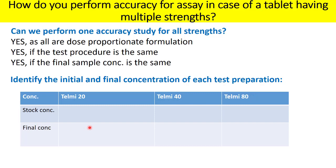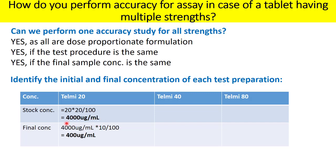The stock concentration is the initial concentration of Telmisartan. For Telmisartan 20 mg tablet, 20 tablets are taken and dissolved to 100 ml — this gives a stock concentration of 4000 µg/ml. For the final solution, 10 ml of the stock is taken and diluted to 100 ml, giving a final test concentration of 400 µg/ml.